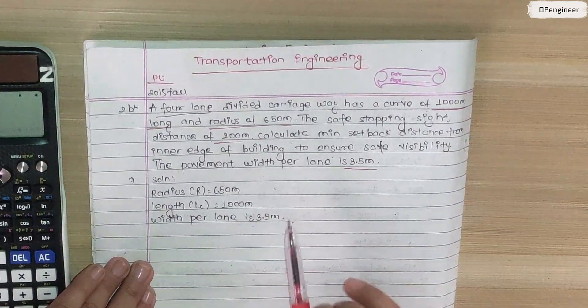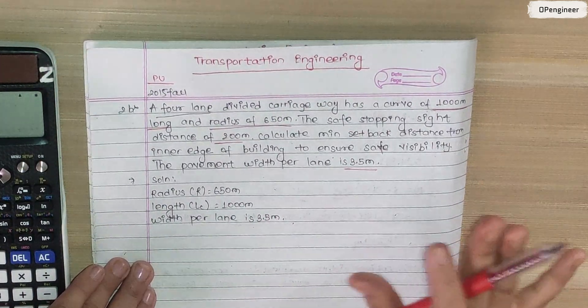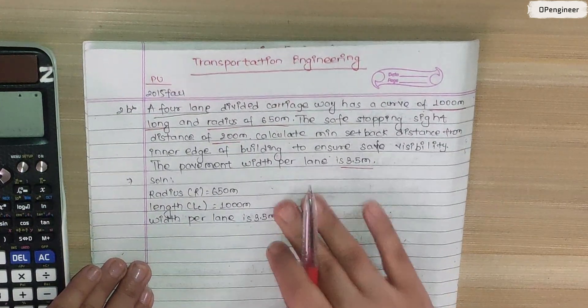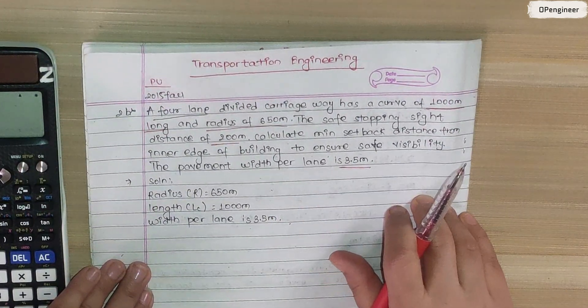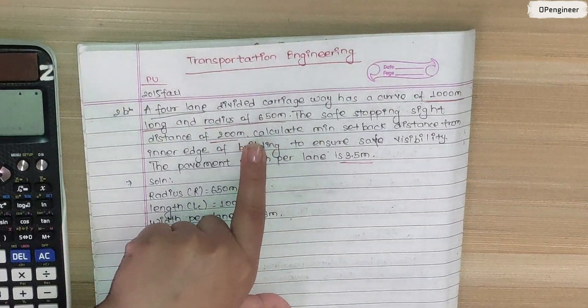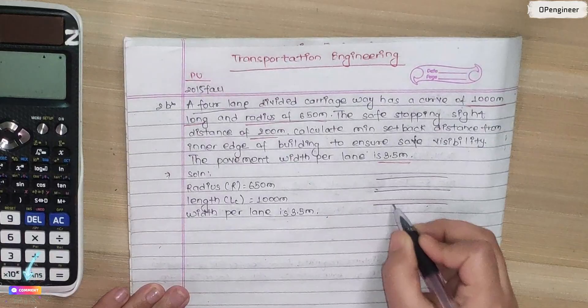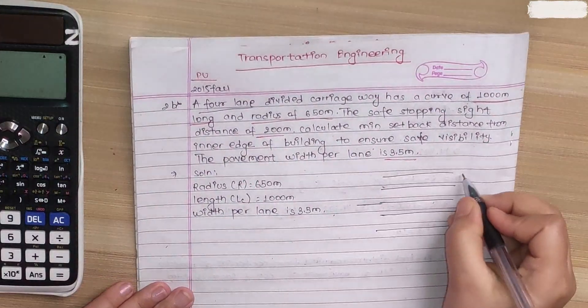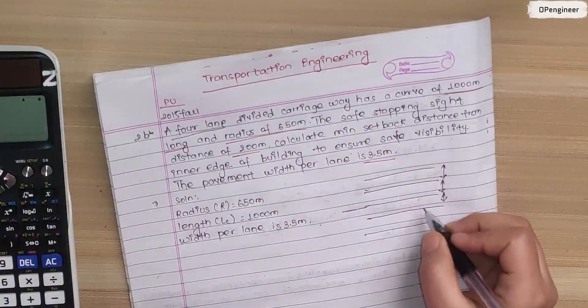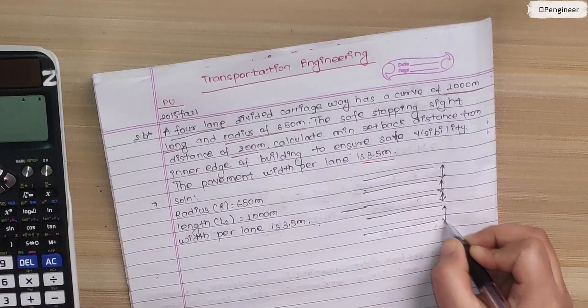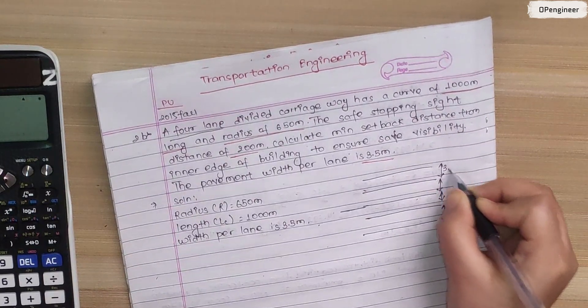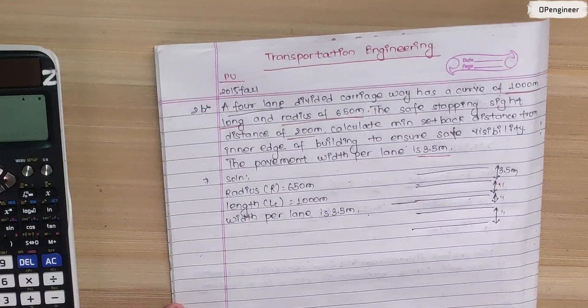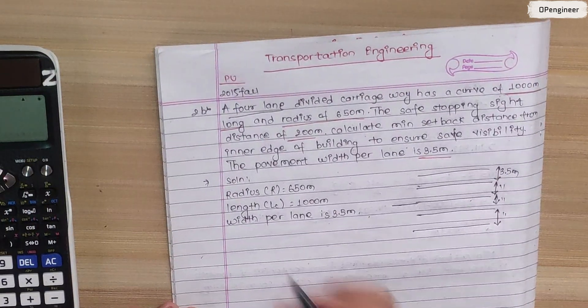So we have: radius 650 meter, length of curve 1000 meter, safe stopping sight distance 200 meter on a four-lane highway, each lane width 3.5 meter. We need to calculate the minimum setback distance.